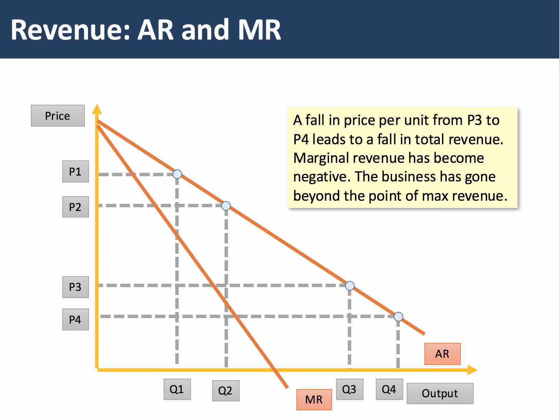First, average and marginal revenue — especially when average revenue is downward sloping. When the demand curve is downward sloping, the marginal revenue curve is twice the gradient and half the average revenue curve, so it will cut the x-axis halfway from where the average revenue curve cuts the x-axis.